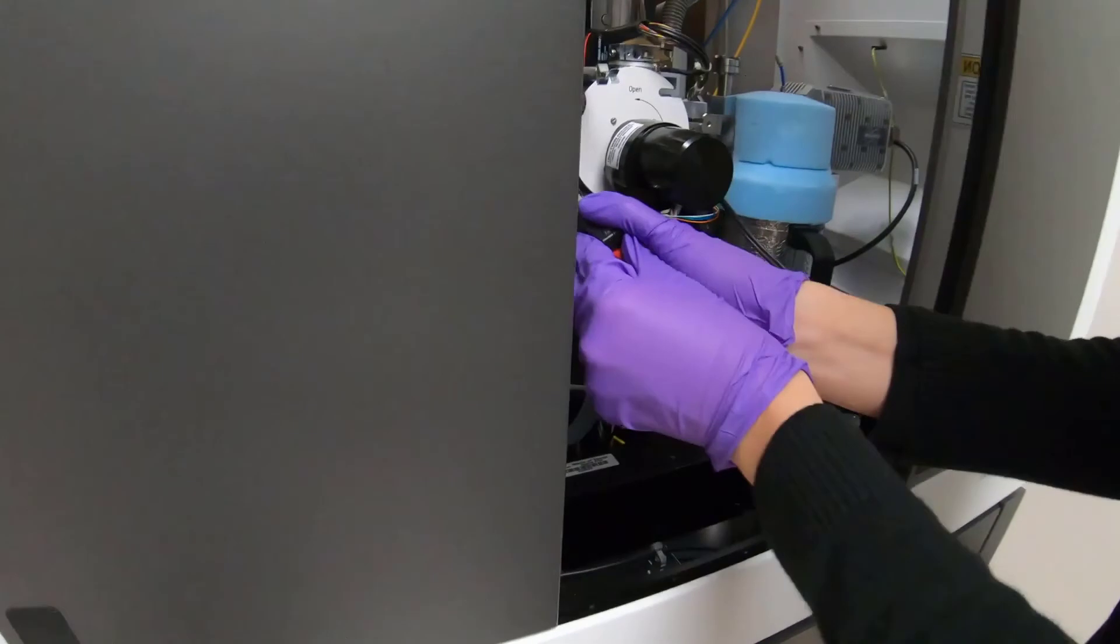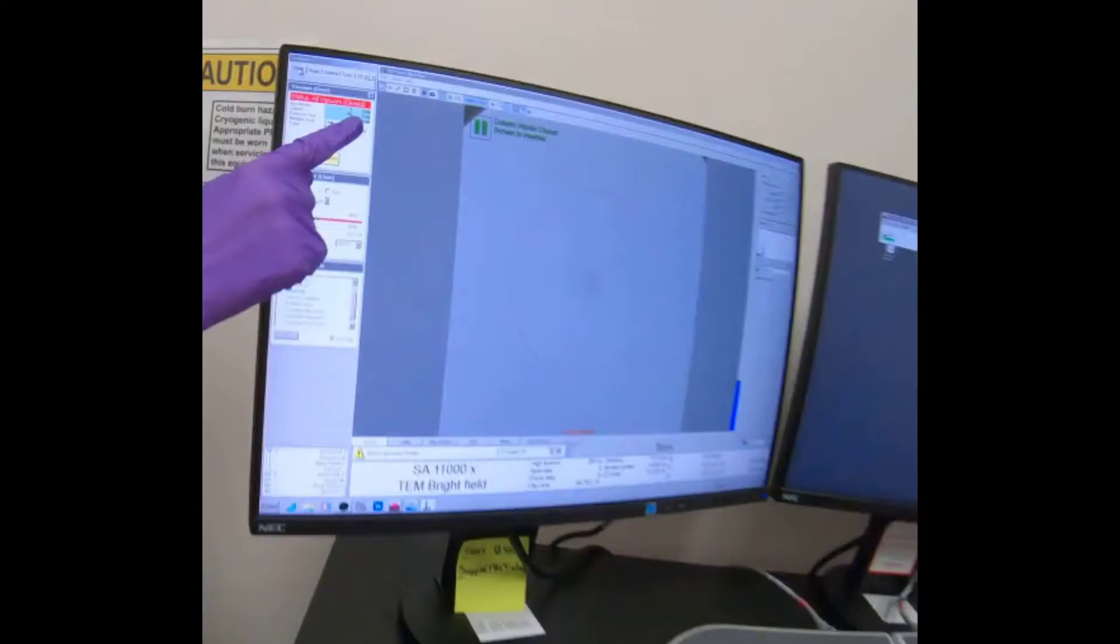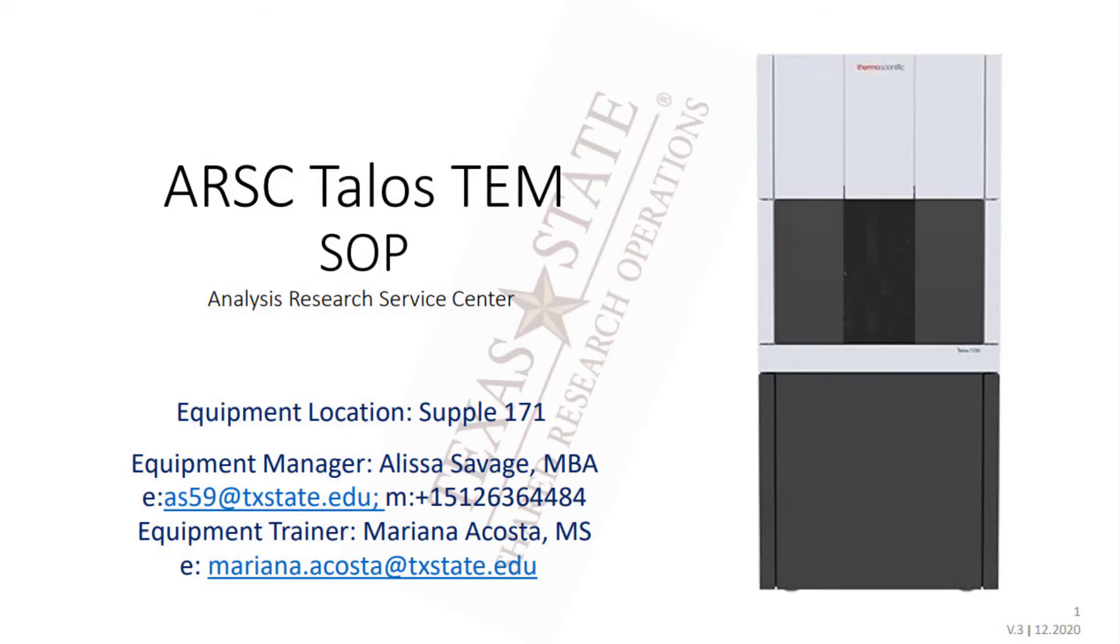Plug in the cable connection to the port on the left side of the airlock. Check the column vacuum again to verify it is at 20 log or lower before proceeding. Please check the ARSC TALOS TEM standard operating procedures for the next steps.